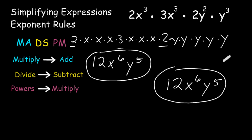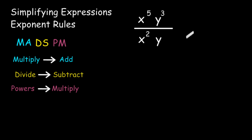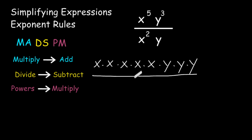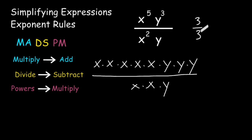Now let's try an example that involves division of like bases with exponents. We have x to the fifth power times y to the third power divided by x to the second power times y. Just like the previous examples, we can write this expression in expanded form. For the numerator, we have x to the fifth power expressed as x times x times x times x times x, multiplied by y to the third power, which is y times y times y. All of that is divided by x to the second power — x times x — times a single y. Remember, anything divided by itself is equal to 1.